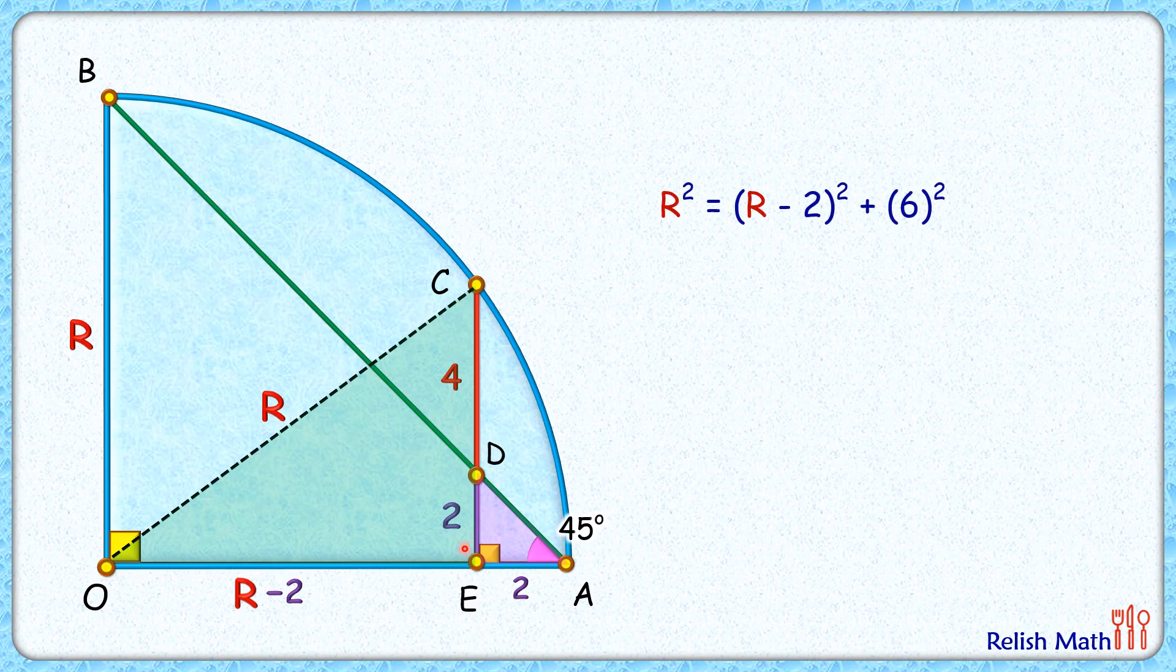plus 6². Apply the (a - b)² identity here. We'll get r² equals r² plus 4 minus 4r, and 6² is 36. Solving it, both sides' r² will get cancelled, and we'll get 4r equals 40.